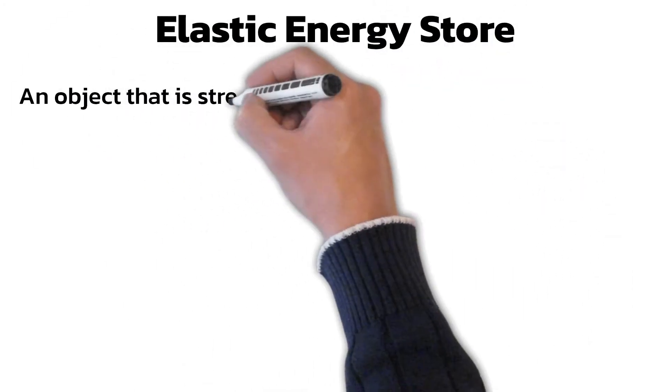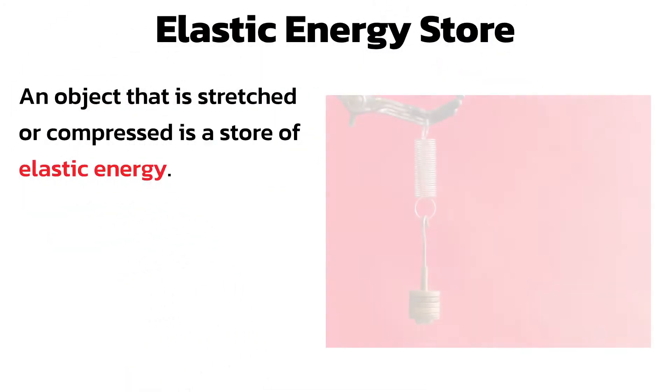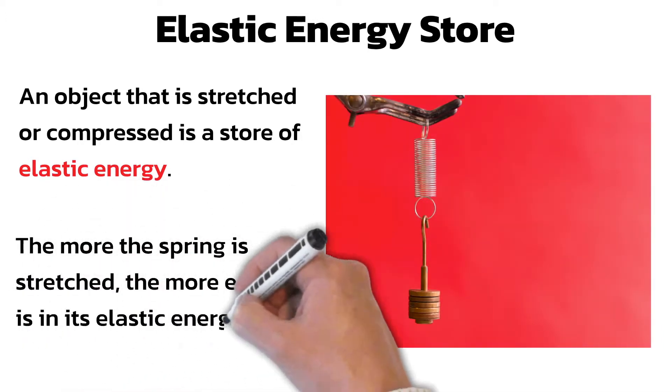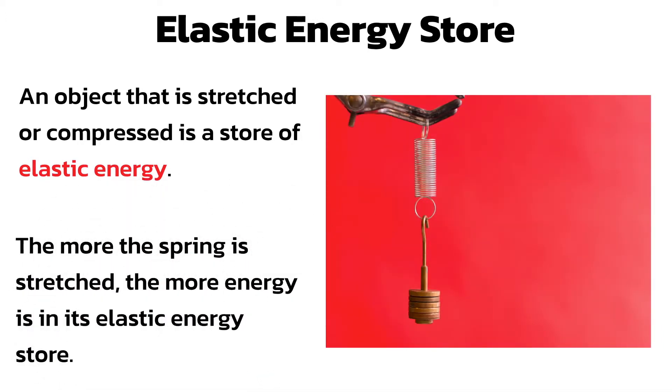The elastic energy store. An object that is stretched, like a rubber band, or compressed, like squashing a sponge, is a store of elastic energy. The more a spring is stretched, the more energy is in its elastic energy store.